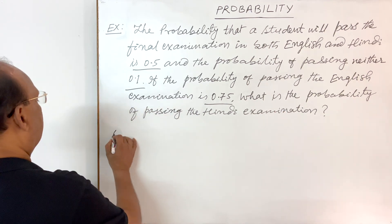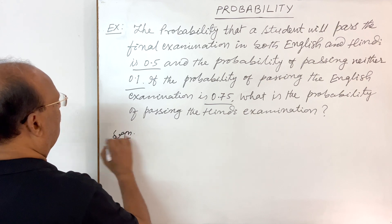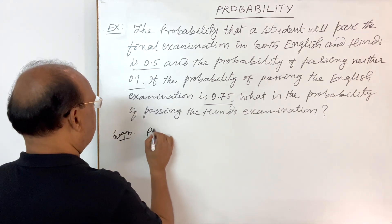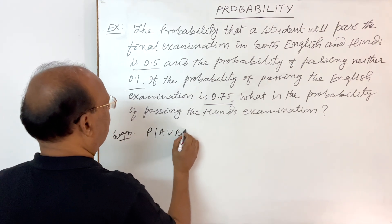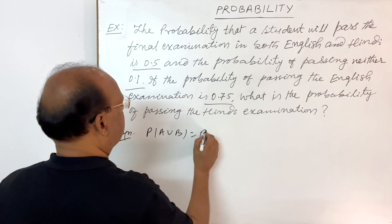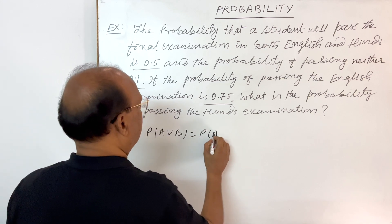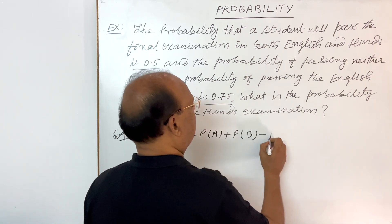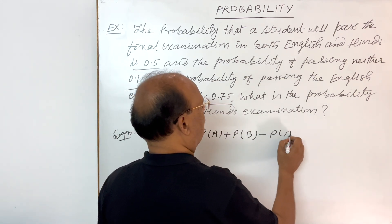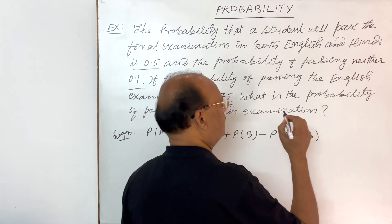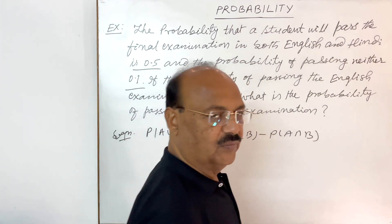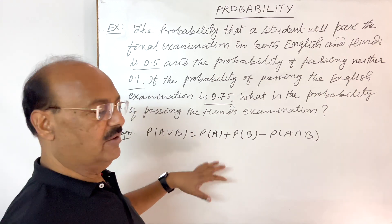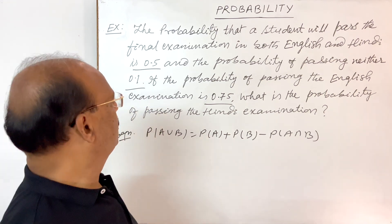Let us see the solution. We will use a formula here: the probability of A union B is equal to probability of A plus probability of B minus probability of A intersection B. This is the formula which will be applicable here.